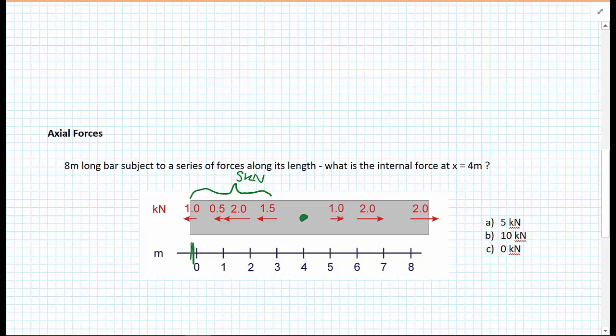On the right-hand side, we have two kilonewtons, two kilonewtons, one kilonewton, and the sum of all those forces is again five kilonewtons. At the point in the middle at four meters, we want to know what is the internal force. There are three potential answers: the internal force might be five kilonewtons, or it could be ten kilonewtons since we have five pulling each way, or because we have five kilonewtons on each side the material is in equilibrium and the internal force is zero.